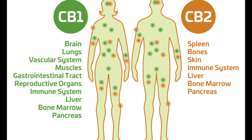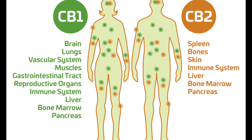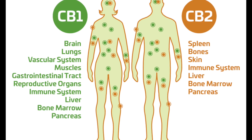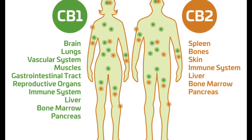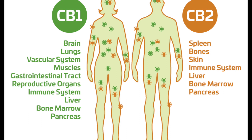CB2 receptors tend to be found in the peripheral nervous system. They are especially concentrated in immune cells. When CB2 receptors are activated, they work to reduce inflammation. Inflammation is an immune response which is believed to play a role in many diseases and conditions.